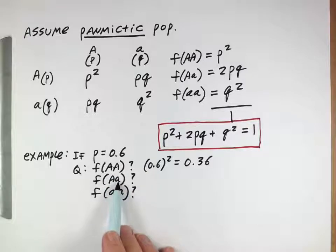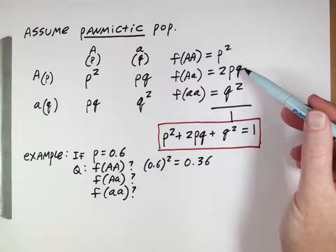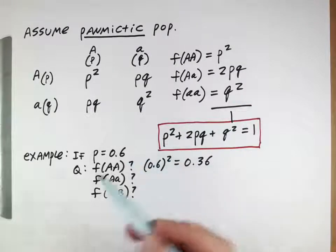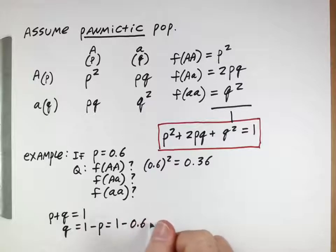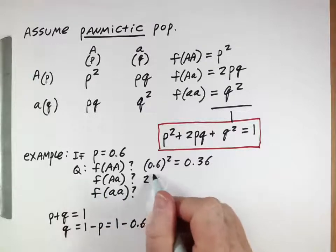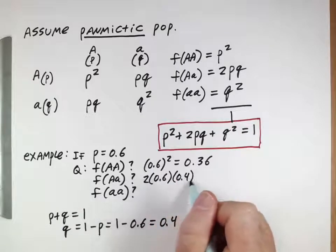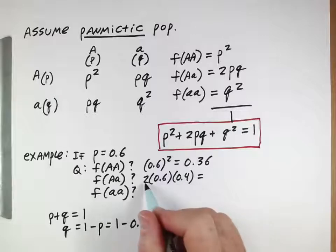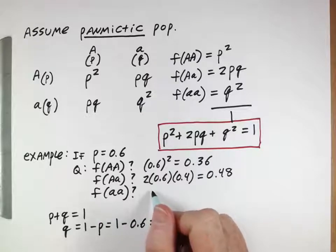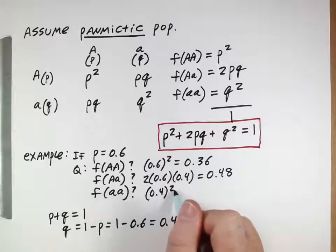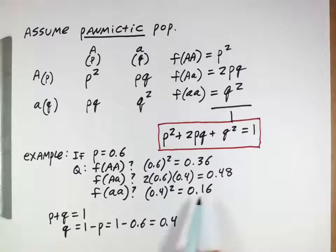For the heterozygote, the frequency is 2PQ, so we need Q. We know P plus Q equals 1, so Q equals 1 minus P, which is 1 minus 0.6 equals 0.4. The frequency of the heterozygote is 2 times P times Q: 2 times 0.6 times 0.4 equals 0.48. So 48% of the population is heterozygous. The frequency of the lowercase aa homozygote is Q squared: 0.4 squared equals 0.16, so 16% of the population are these homozygous individuals. We could also have solved for this last one by subtracting 36% and 48% from 1.